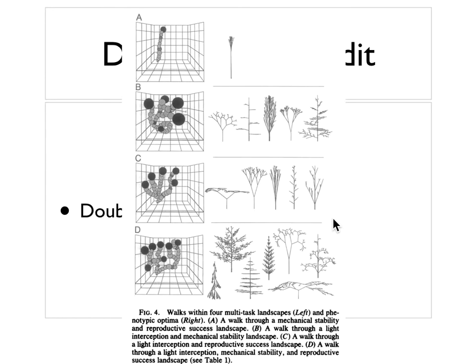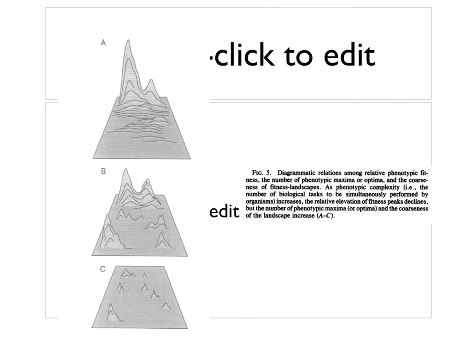We can see how we get more of these optimums as we move through time, but it turns out that the peaks are actually lower. A is showing the height of a peak when you just have a single task to complete, and then B and C are showing what happens to the peaks as the coarsening of the landscape increases, as you have more fitness needs that you need to achieve.